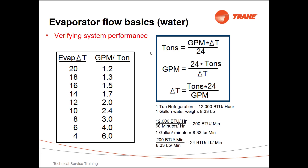Once you know what your gallons per minute flow is through the chiller, then we can run this formula — GPM times delta T divided by 24 — to determine how many tons that machine is actually doing.